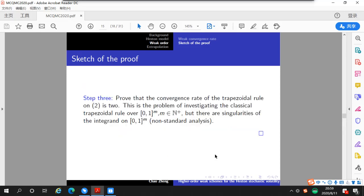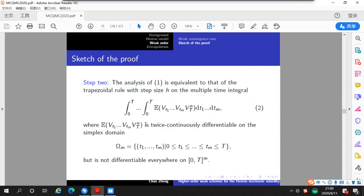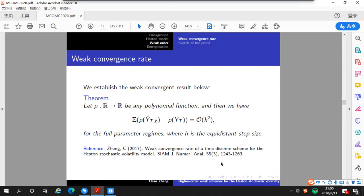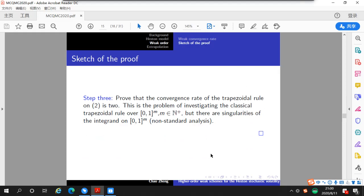And finally, we shall prove that the convergence rate of the trapezoidal rule is as defined. This is the problem of investigating the classical trapezoidal rule over the hypercubes, but there are singularities of the integrand on hypercubes, as we have discussed, which is non-standard analysis. Actually, half of this paper is devoted to proof step 3, which is certainly far from trivial.